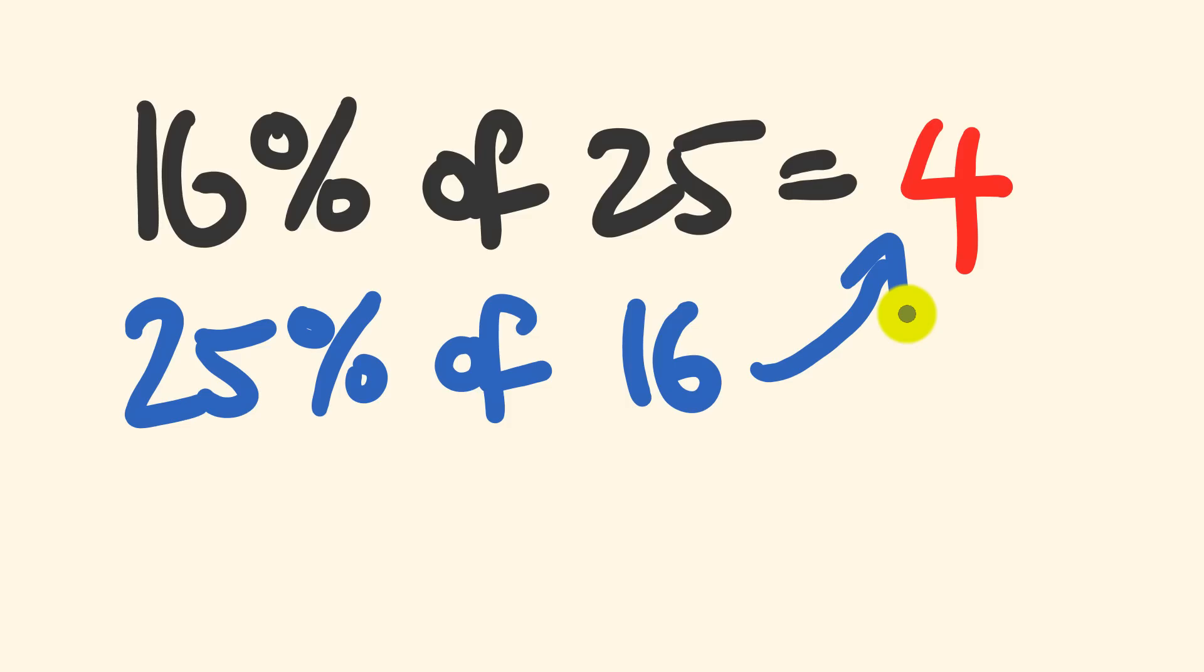So 16% of 25, not so nice. 25% of 16, heaps easier. So what about we have a look at a few more examples of these and you give them a go. First one we're going to try is 48% of 50. I think you should be able to give that one a go.